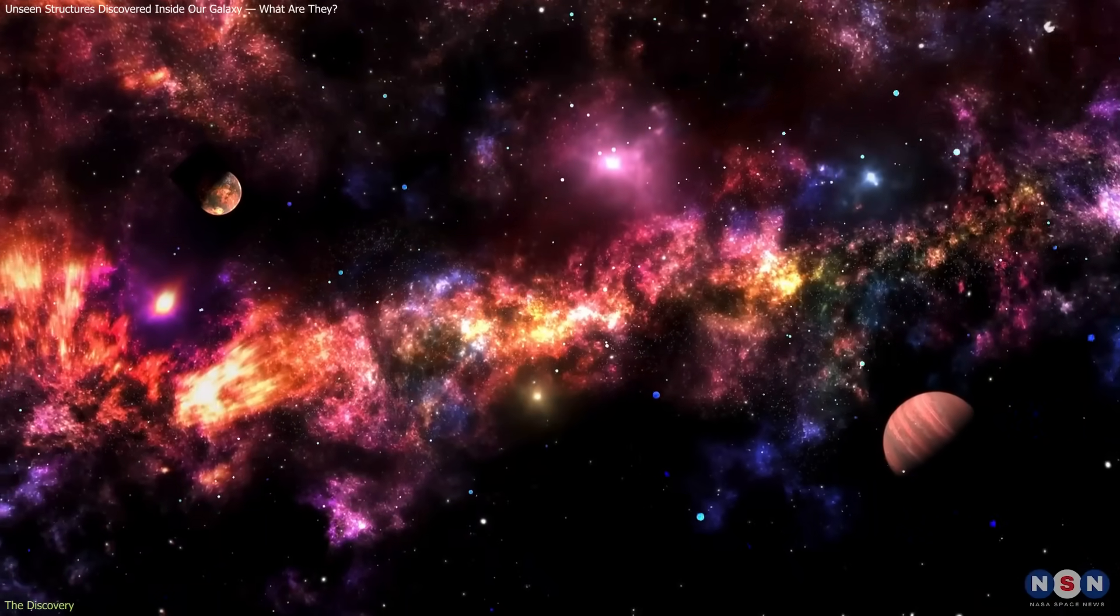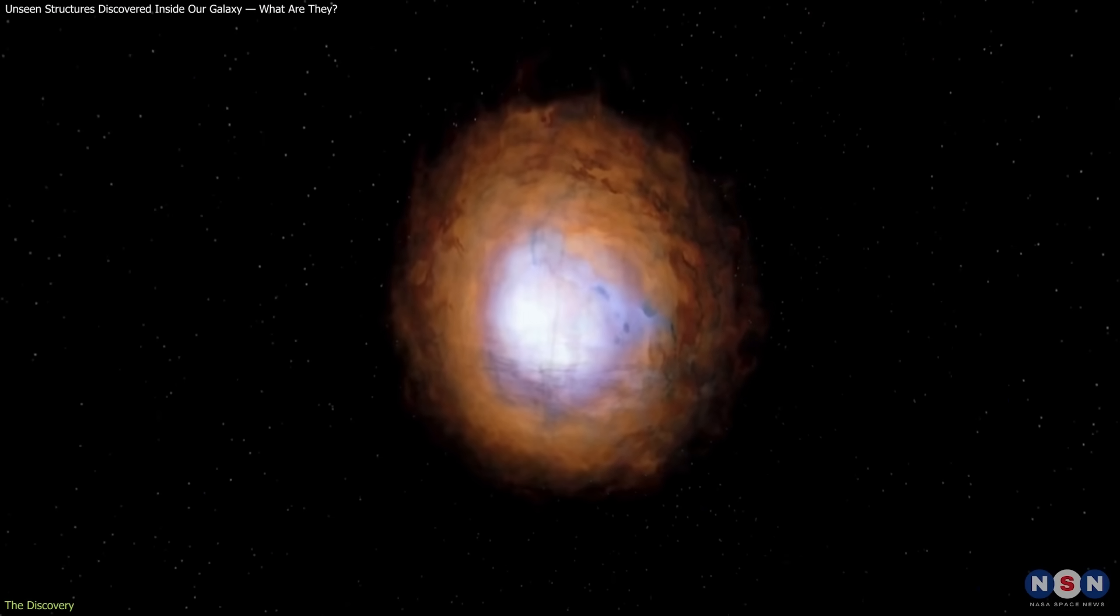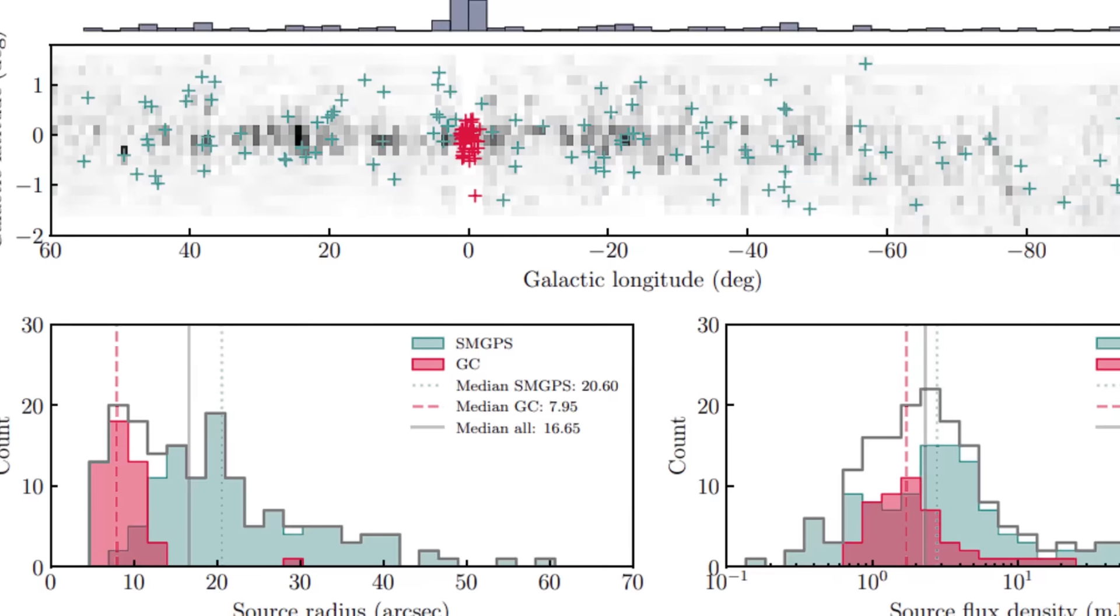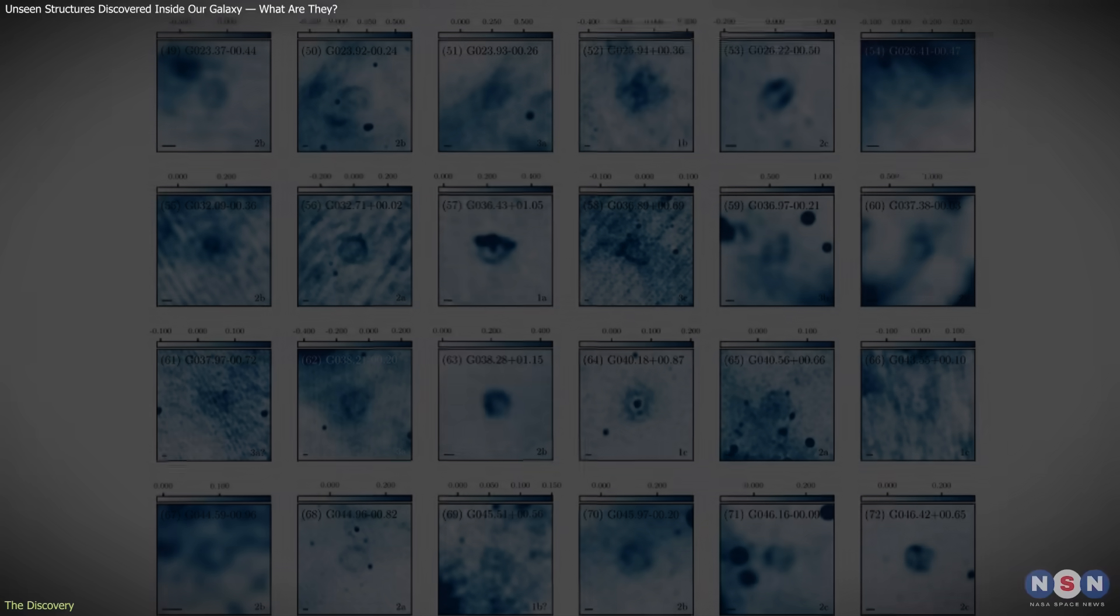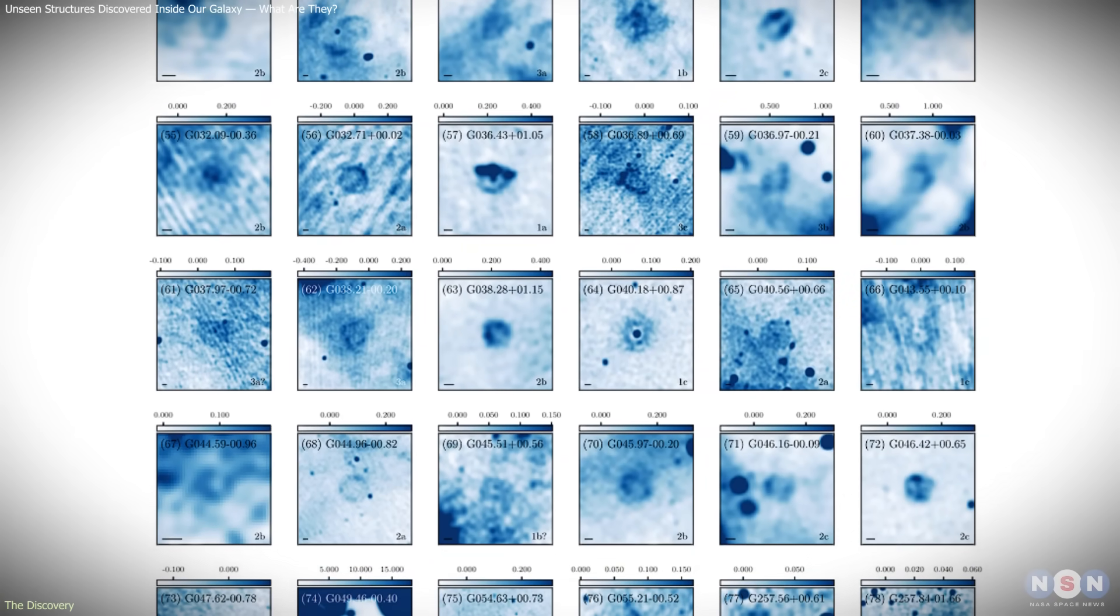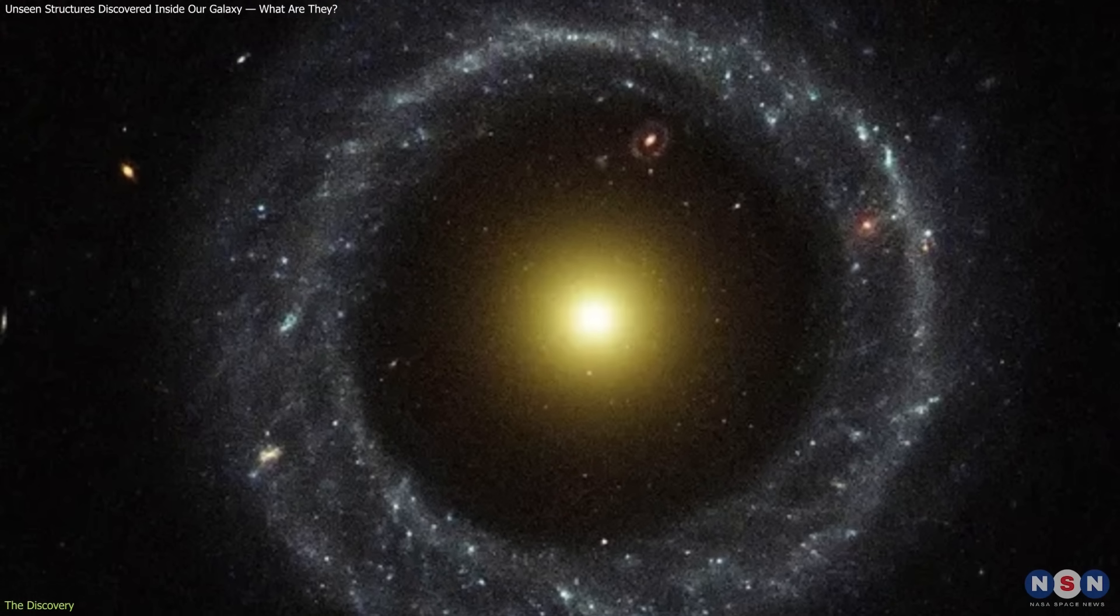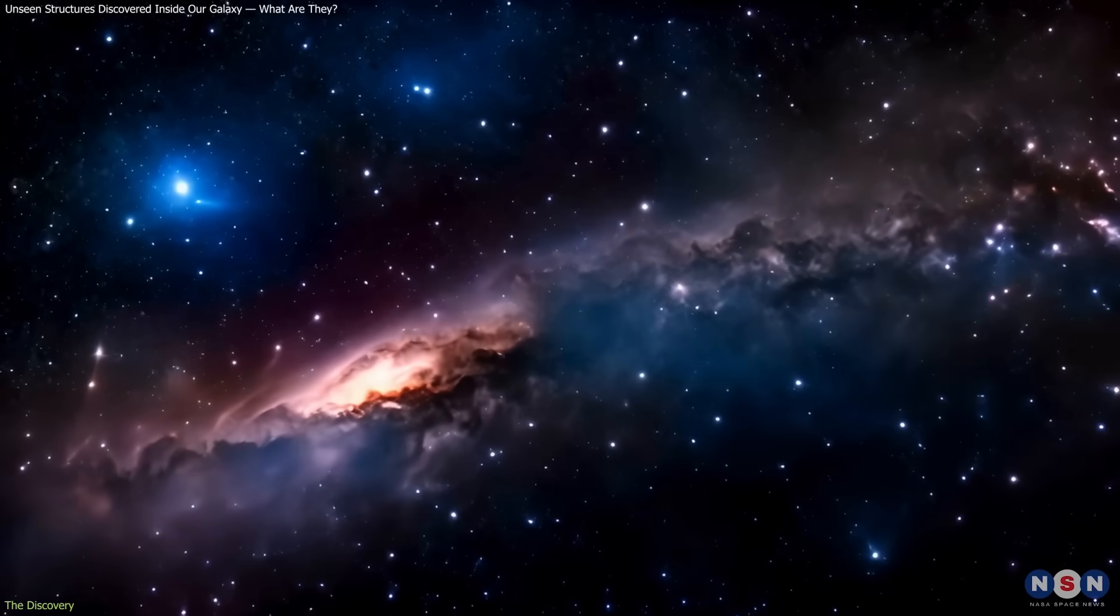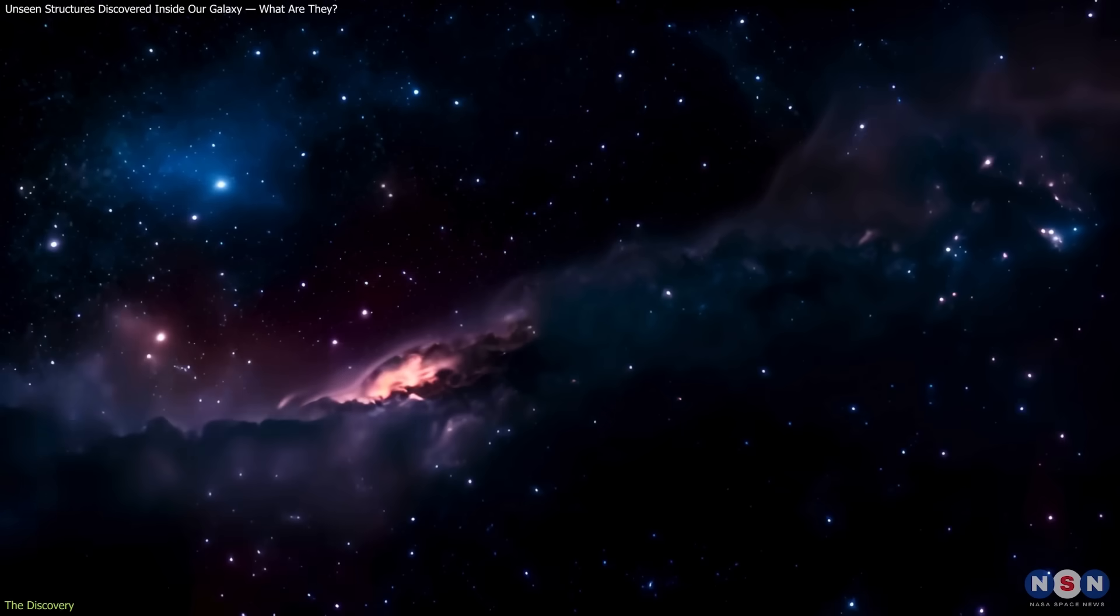Many fit known categories such as planetary nebulae or shells from past stellar eruptions, but others remain unclassified, standing out for their lack of detectable emission at any other wavelength. A number of these features resemble odd radio circles, ring-like radio structures previously found around distant galaxies. Their presence inside our galaxy suggests that multiple physical mechanisms may produce similar shapes.